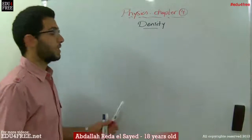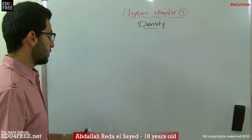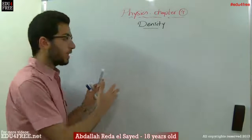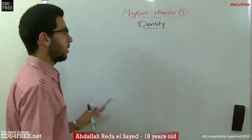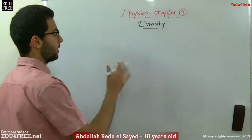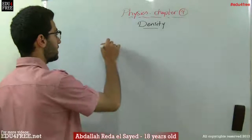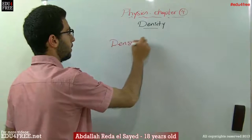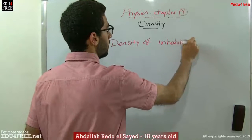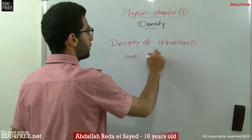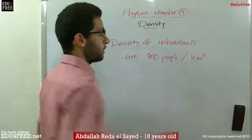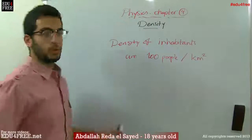Today we're going to talk about density in Chapter 4 in Physics. Simply, density is the number of units of something in a certain volume or a certain area. For example, in real life, there are some people living in an area. We can say that the density of people or inhabitants is, for example, 100 people per square kilometer. This is called density.